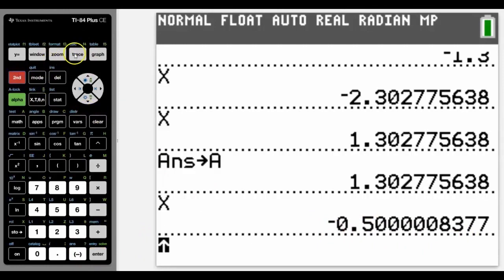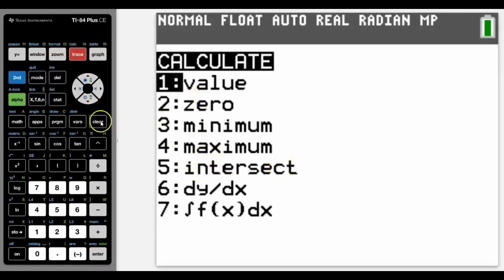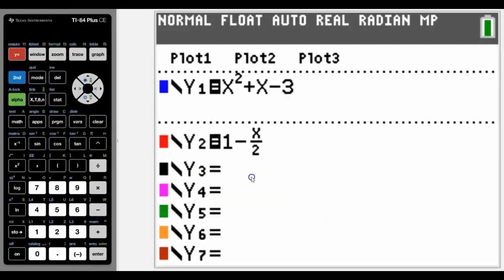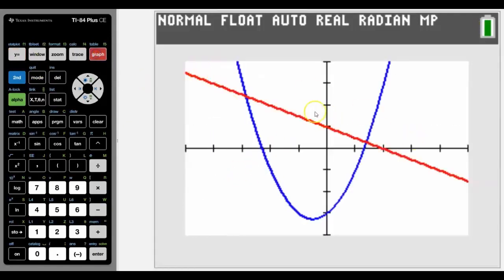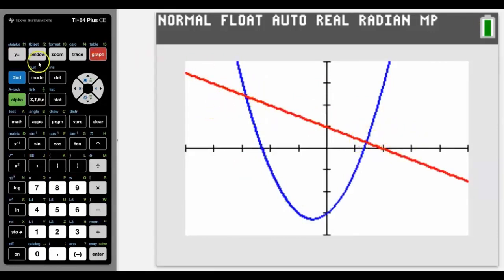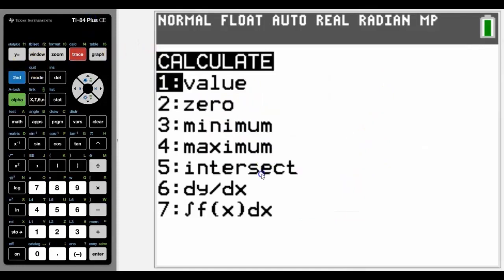We're going to finish with looking at intersect but for us to do that we need another graph. And in this case I've typed in a linear graph 1 minus x on 2 which will look something like that. And if we're trying to find where the intersect we can see the intersects in two places. So let's see what happens when we go to calc intersect.